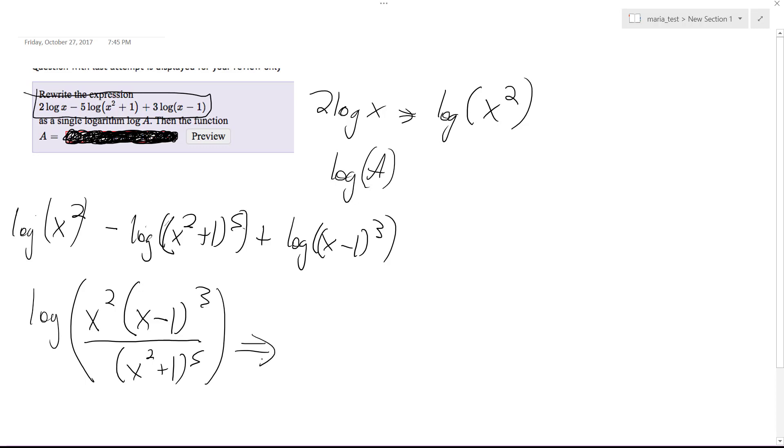And then you just get rid of the log, and it becomes x squared, because this is what they want. They just want a. So that's going to be x squared times x minus 1 cubed, all over x squared plus 1 raised to the 5th. That's it. Hopefully that helps you.